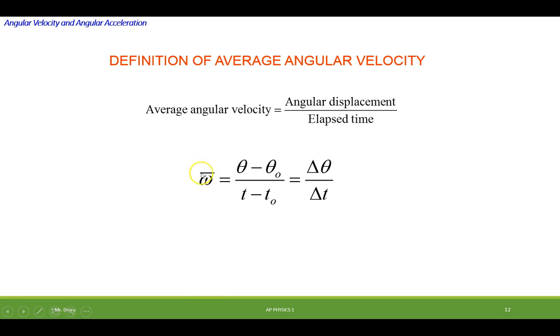The line above it means average. What we're doing is taking the displacement divided by the time, which gives us the angular velocity. What units would it be in? Radians per second, because angular displacement is in radians and time is in seconds.